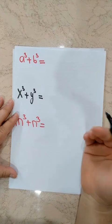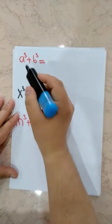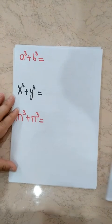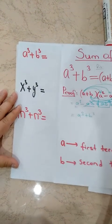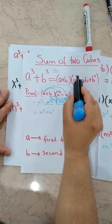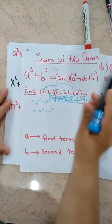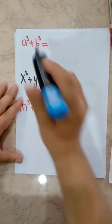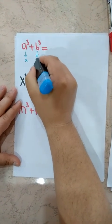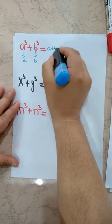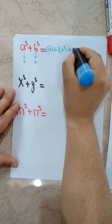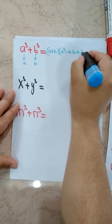Now let's try to solve inversely: we are given A cubed plus B cubed and we want to factor it. We have the rule: A cubed plus B cubed equals A plus B times A squared minus AB plus B squared. Our first term is A, second term is B, so we write A plus B times A squared minus AB plus B squared.